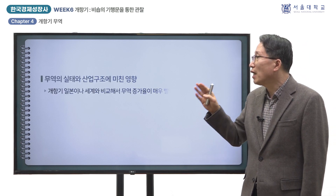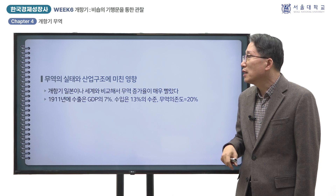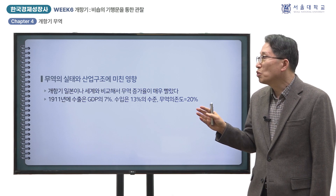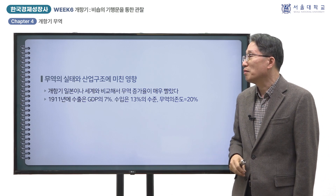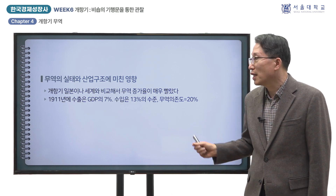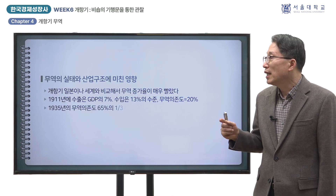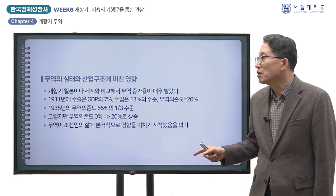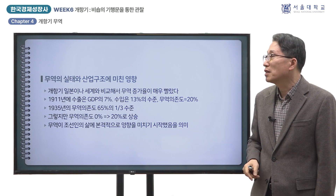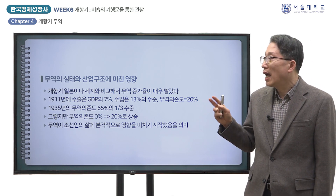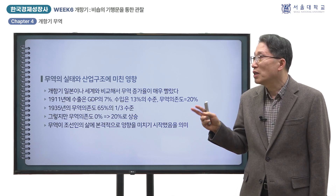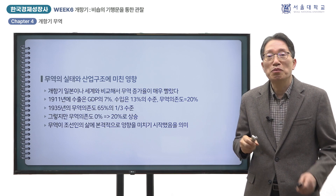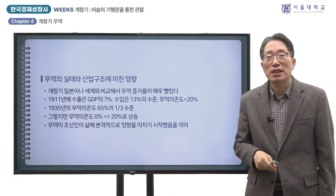무역의 규모를 GDP 대비로 가늠해 볼 수 있습니다. GDP의 추계가 1911년부터 시작되므로, 그 해의 수출과 수입의 GDP 대비 비율인 수출 또는 수입 의존도는 각각 7%와 13%로 나왔습니다. 양자를 합친 무역 의존도는 20%가 됩니다. 식민지기의 정점에 달했던 1935년의 수출 또는 수입 의존도는 33%와 32%였으므로, 개항 후 35년간 무역의 비중이 20%포인트 늘어난 것을 뜻합니다. 이 시기 무역이 조선인의 삶에 본격적으로 영향을 미치기 시작했다고 할 수 있습니다.